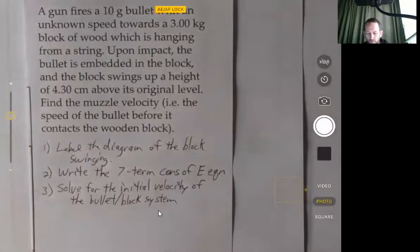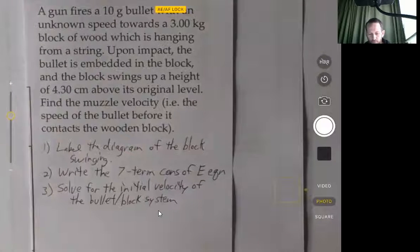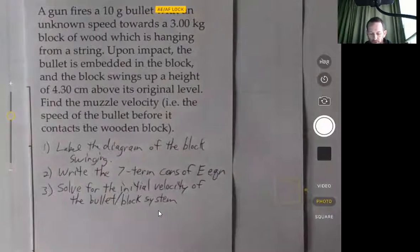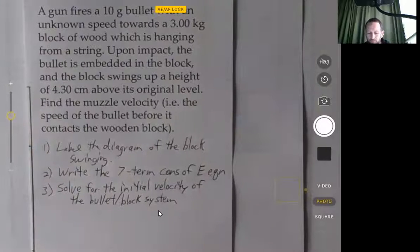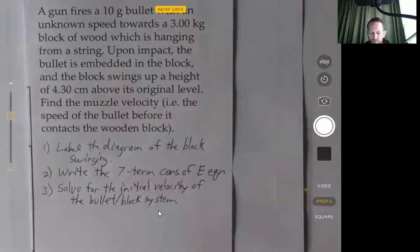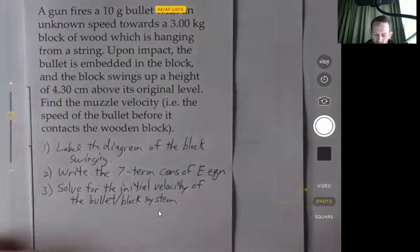So this is just for the part from when the bullet was already in the block. From then is our initial, and then the final is at the maximum height of 4.3 centimeters.